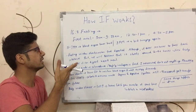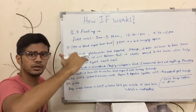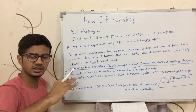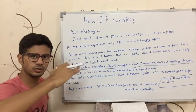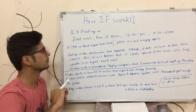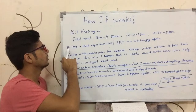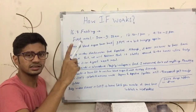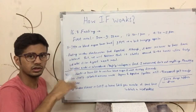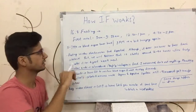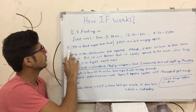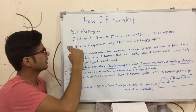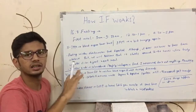Our blood sugar is increasing after eating. In about 2 hours, our body reduces the blood sugar as a healthy person. So when the body is not able to reduce it, it can lead to diabetes. But now it's difficult, so we have to go back to normal.